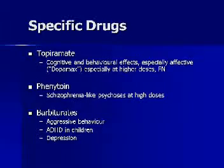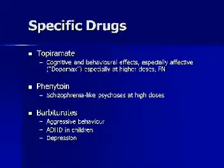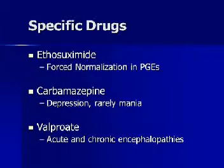It is now recognized that therapeutic efficacy can be attained at 50 mg twice a day without the cognitive impairments seen at higher doses. Phenytoin at high doses can produce a schizophreniform-like illness. Barbiturates can have strange behavioral effects and depression in adults. Ethosuximide produces forced normalization in patients with primary generalized epilepsy. Carbamazepine can produce depression but rarely mania — though it can also be used to treat these conditions, and every patient will respond differently to the same drug.